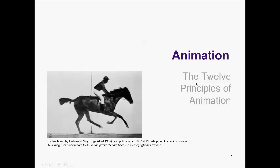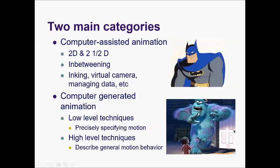We will tackle the two main categories of animation. We have computer-assisted animation, which includes 2D and 2.5D, in-between inking, virtual camera, and managing data. We also have computer-generated animation, which comprises low-level techniques with precisely specified motion and high-level techniques that describe general motion.